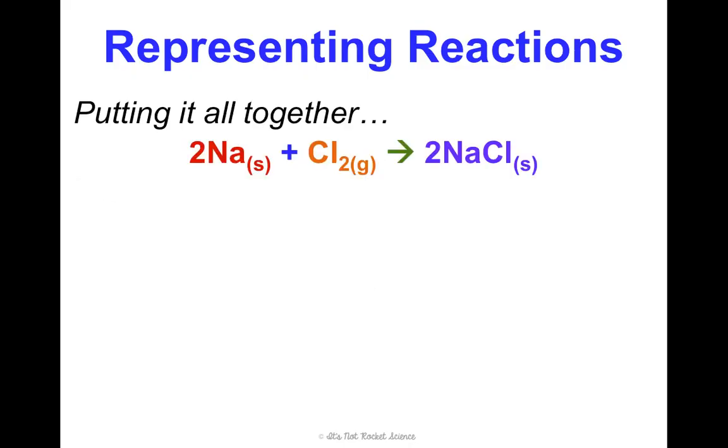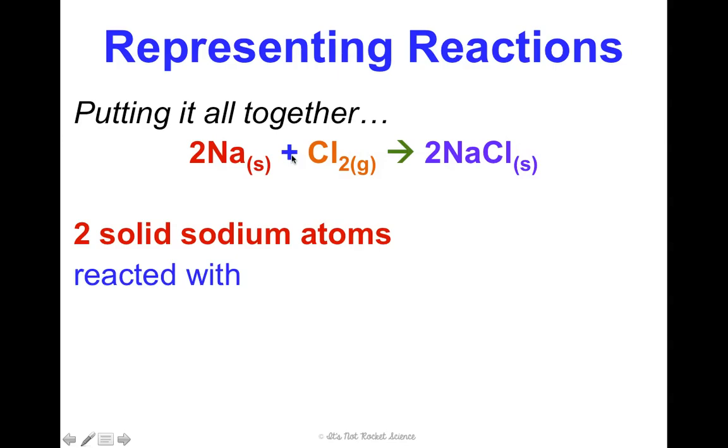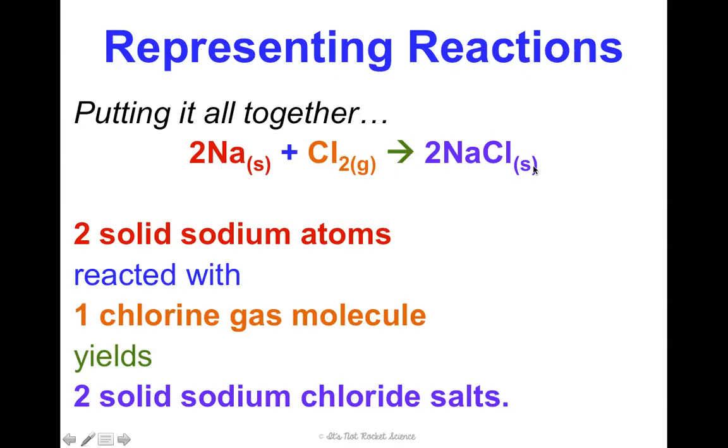Alright, so let's put it all together. I'm going to write out in words what this says, so that if you were reading this, this is what you'd be saying in your head. When you look at this red, this 2Na(s), that is two solid sodium atoms. This blue arrow means reacts with one chlorine gas molecule yields, or to make, two solid sodium chloride salts.